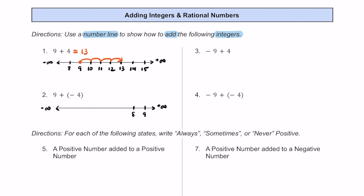Let's put some numbers to the left of 9: 8, 7, 6, 5, 4, 3, and 2. The first number we're starting off with is 9, so we put a dot there. We're adding a negative 4, so negative numbers mean we move to the left: 1, 2, 3, 4. We move left 4 spaces and end up at 5. So 9 plus negative 4 equals positive 5.